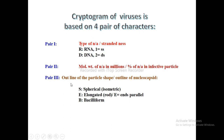Pair 3 tells us about the outline of the particle shape and the outline of the nucleocapsid. We use S for spherical shape, E for elongated or ends-parallel shape, and B for bacilliform shape.